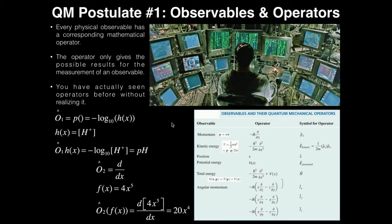First of all, what is an observable? Well, an observable is really just a physical parameter, something that you're probably used to seeing from an introductory physics course. For example, we've got several here of the common ones: momentum, kinetic energy, position, potential energy, total energy, angular momentum, and so on and so forth.